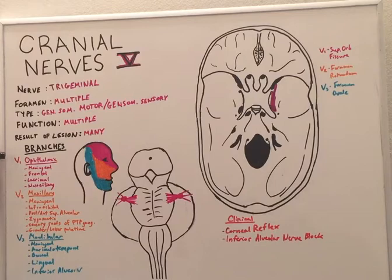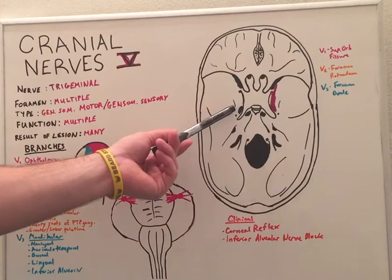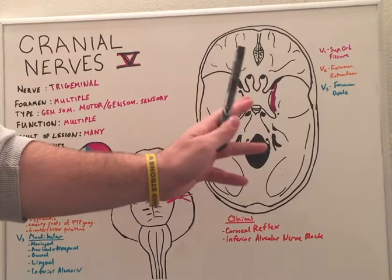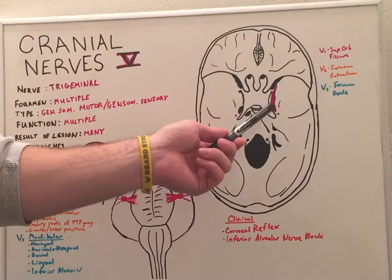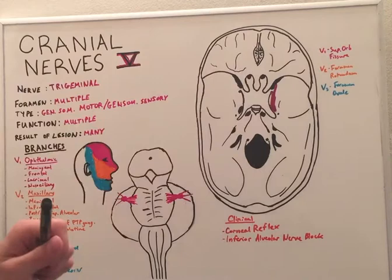Now the ophthalmic branch V1 passes through the superior orbital fissure, maxillary or V2 passes through the foramen rotundum, and V3 the mandibular branch passes through the foramen ovale. On this diagram I have omitted one of the trigeminal nerves just so that one can see the three foramen which it passes through, but normally we would have a trigeminal nerve on each side.